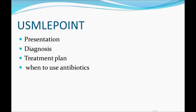Key USMLE points for acute pancreatitis: know the pathophysiology, clinical presentation, and look for history of alcoholism or drug intake. For diagnosis, sometimes they give just a CT scan image to identify. Treatment: start with supportive therapy — nil per mouth, IV fluids, pain medication — then know when to use antibiotics. Also know the multiple prognostic criteria, as they have been tested in USMLE. Thank you for watching.